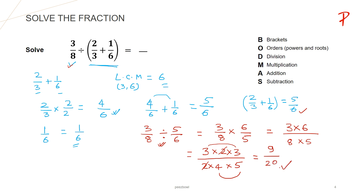So this is the answer, and this is the simplified form of the fraction. We cannot simplify it further, so 9 upon 20 is the answer to this particular fraction question.